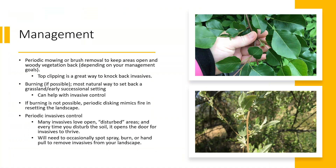Management of your pollinator planting is necessary to keep it open. Periodic mowing or brush removal keeps areas open and woody vegetation back. You can also do top clipping to knock back invasive species — clipping off seed heads or flowering heads — allowing your native plants to catch up. Burning, if possible, is a great way to set it back to a grassland setting in a very natural way and can also help with invasive control. If burning is not possible, periodic disking mimics fire in resetting the landscape. You will need periodic invasives control — things like autumn olive and Bradford pear callery move into open areas very quickly.